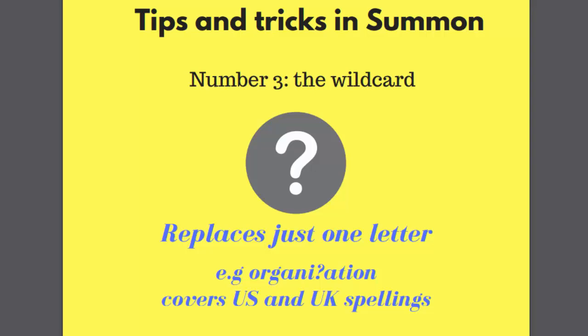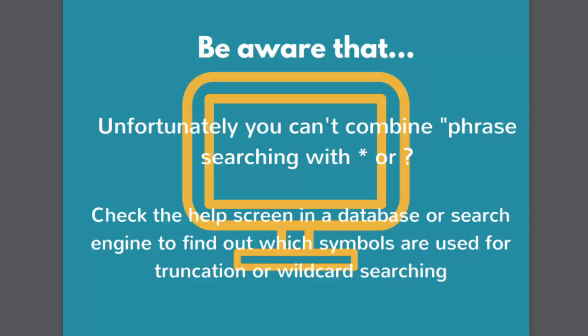Wildcards can be really useful too. This means putting a symbol in the middle of a word to replace just one letter. For example, to search for the UK or US spellings of 'organisation', Summon uses a question mark for this. One word of warning: do not try to combine phrase searching with truncation or a wildcard, as the two functions don't work together.